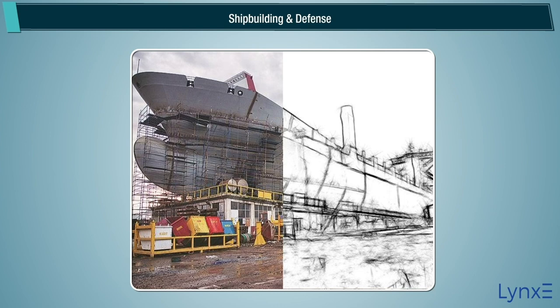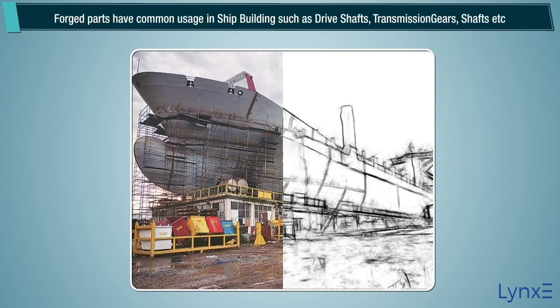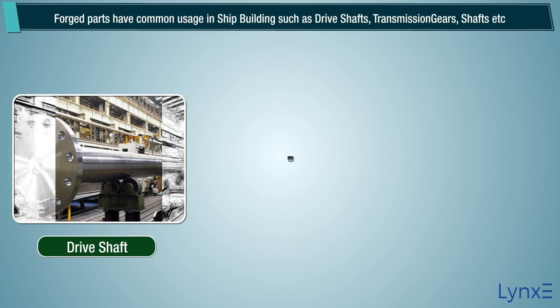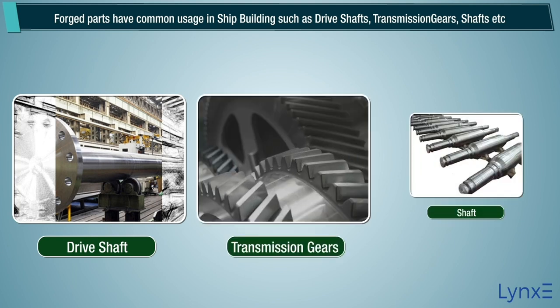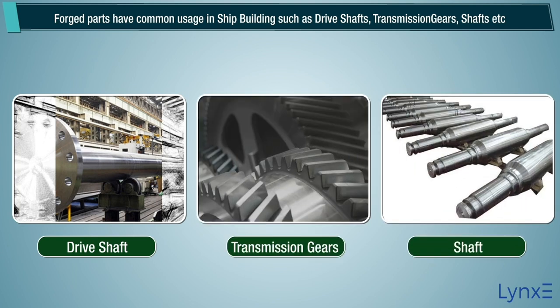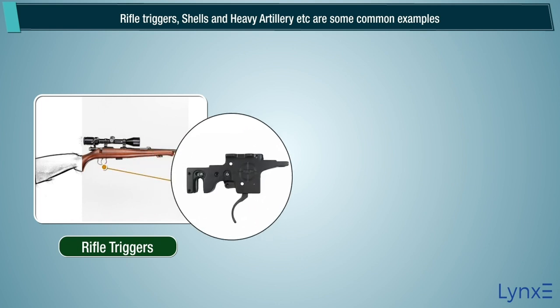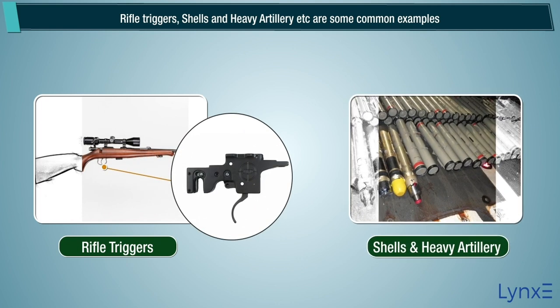Forged parts have common usage in shipbuilding, such as drive shafts, transmission gears, and shafts. Similarly, forged parts have large usage in defense industries; parts such as rifle triggers, shells, and heavy artillery etc. are some common examples.